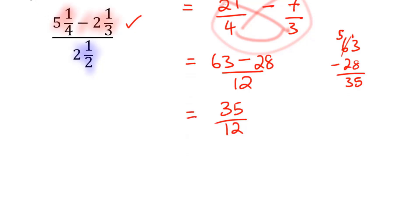So that means here now 35 over 12 divided by two and a half means that I am going to first need to change this to an improper fraction. So that's going to be 35 over 12 divided by two times two is four plus one is five.